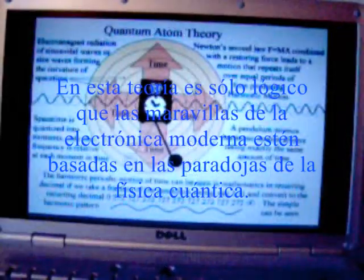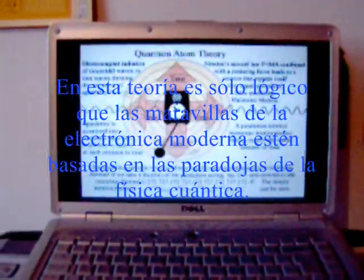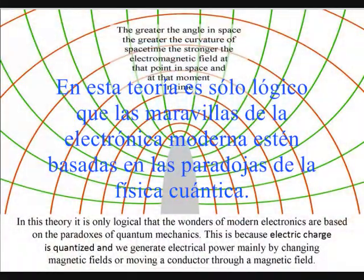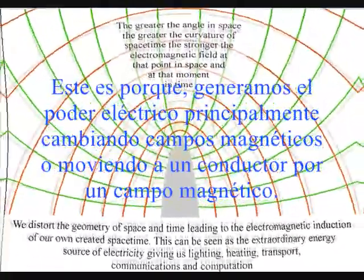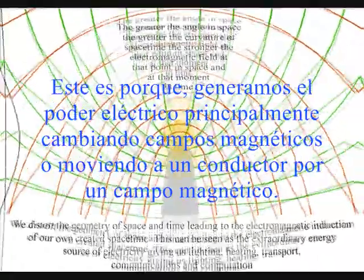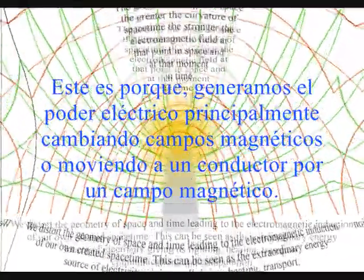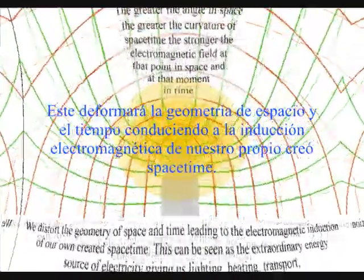In this theory it is only logical that the wonders of modern electronics are based on the paradoxes of quantum mechanics. This is because electric charge is quantized, and we generate electric power mainly by changing magnetic fields or moving a conductor through a magnetic field. This will distort the geometry of space and time, leading to the electromagnetic induction of our own created spacetime, in other words, electricity.